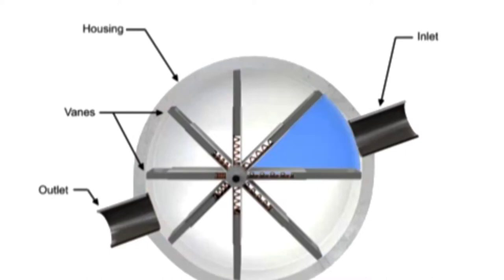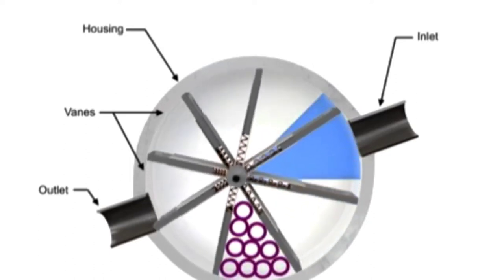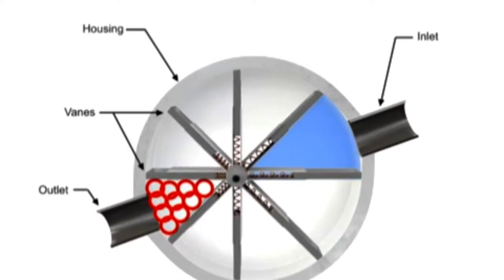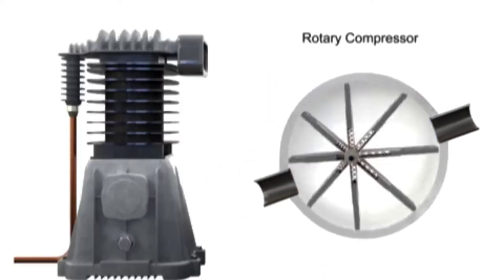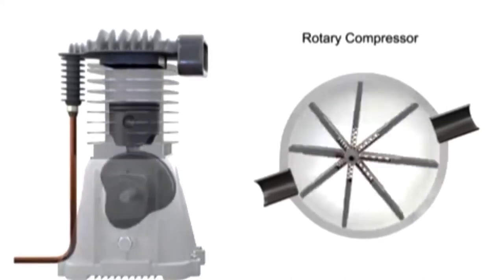Air enters at the largest chamber. As the vanes rotate, they retract, causing the chamber to get smaller and compress the air. Air exits at the smallest chamber. Rotary compressors are typically free of the vibration and pulsation that occurs with reciprocating compressors.